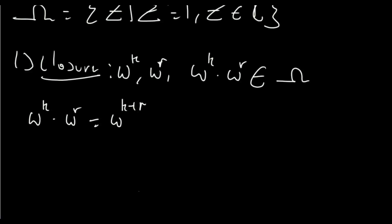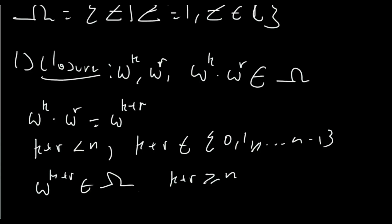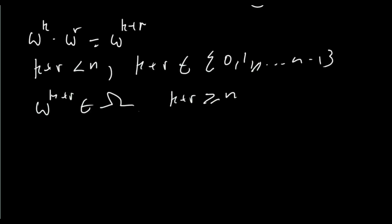Since we're dealing with normal multiplication, this will be omega to the k plus r. There are two cases to consider. First, k plus r could be less than n — in other words, k plus r is a member of the set {0, 1, ..., n minus 1} — and that's fine; omega to the k plus r is definitely a member of our set. However, it's also perfectly possible that k plus r is greater than or equal to n, and we need to consider this case with a bit more thought. We know that both k and r are in the range from 0 up to n minus 1.